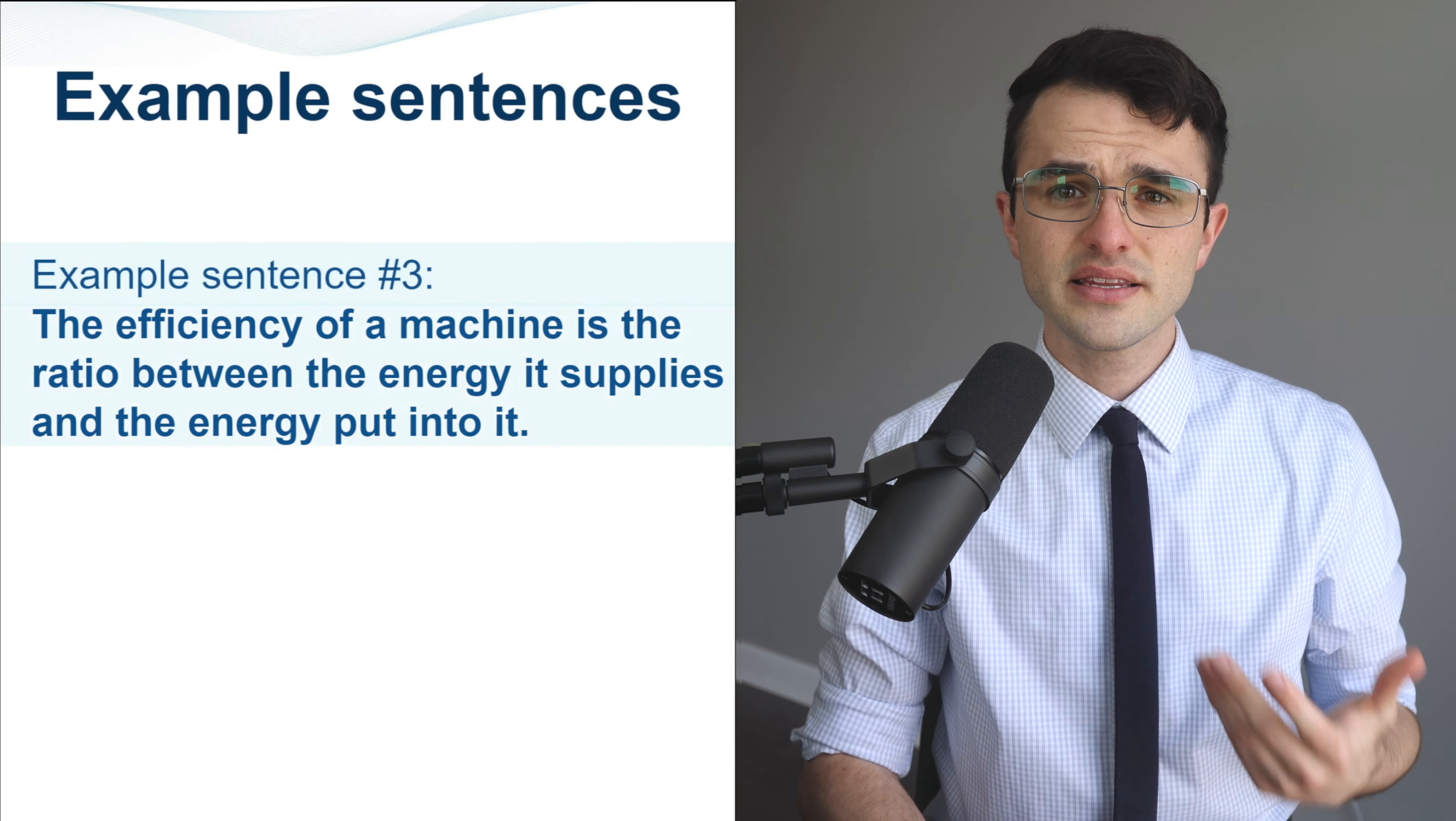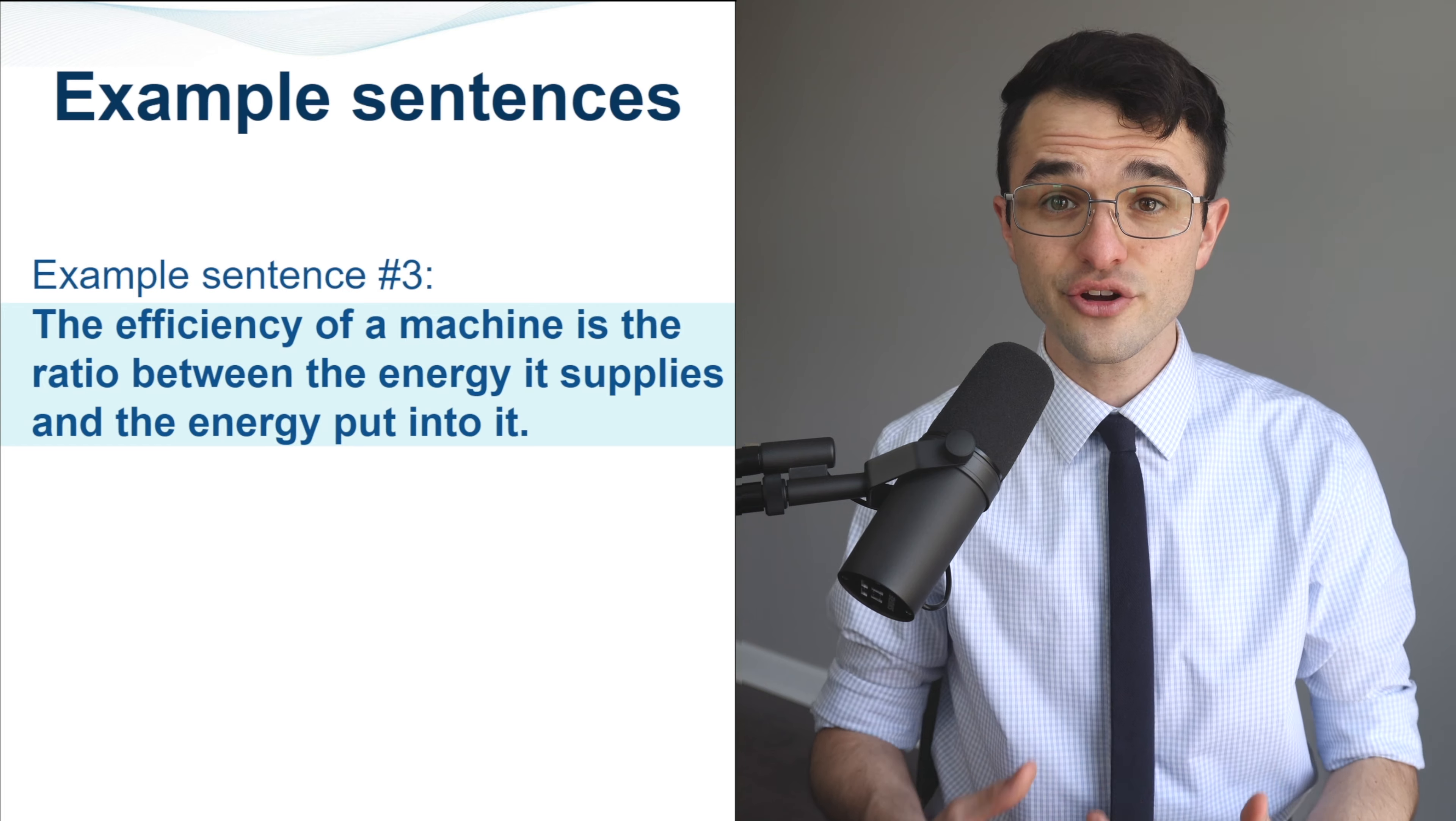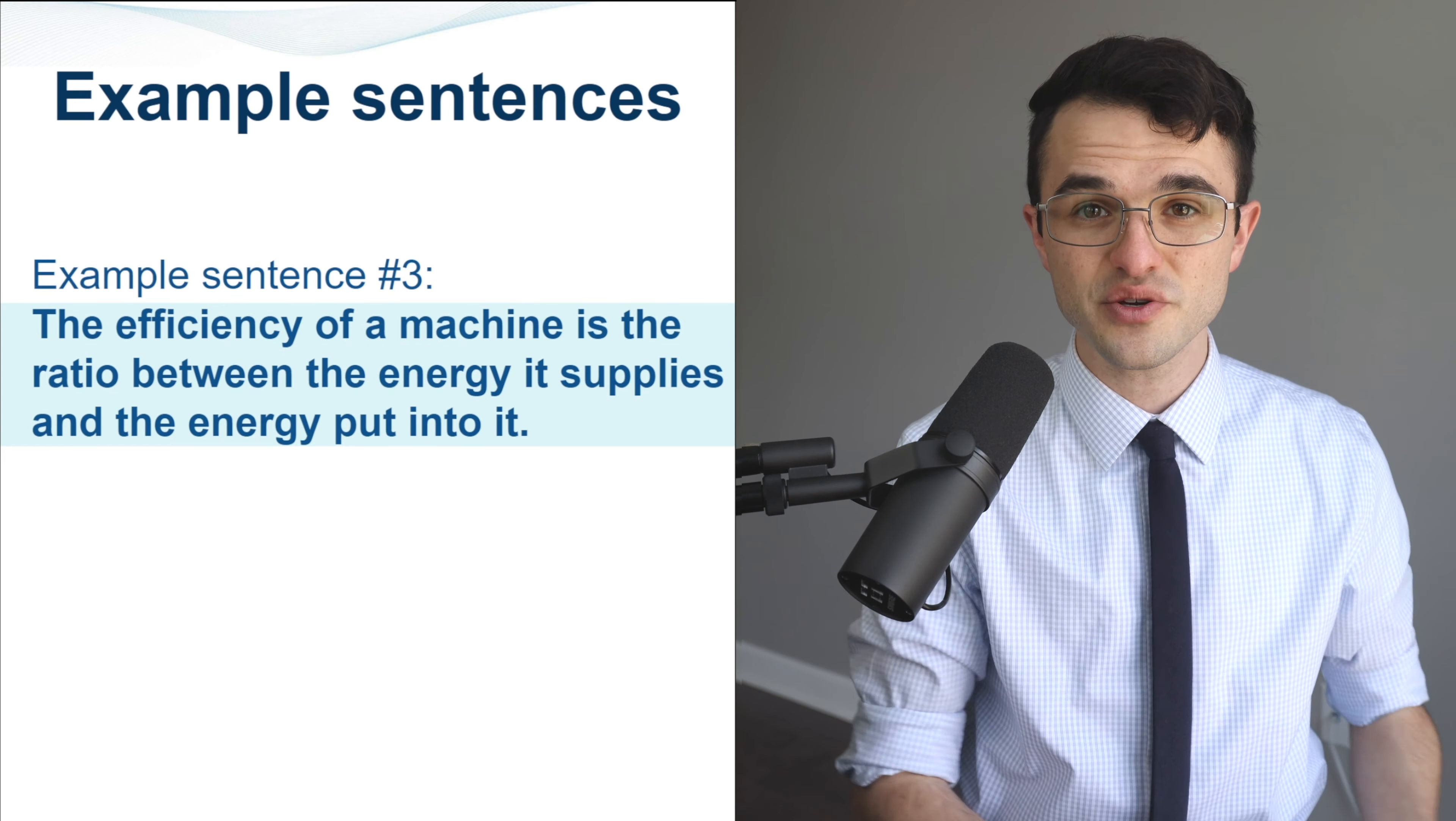Example sentence number three. The efficiency of a machine is the ratio between the energy it supplies and the energy put into it.